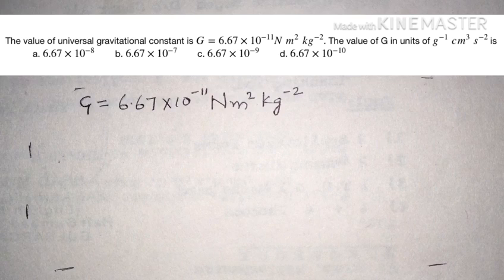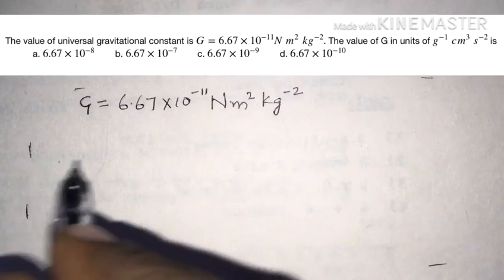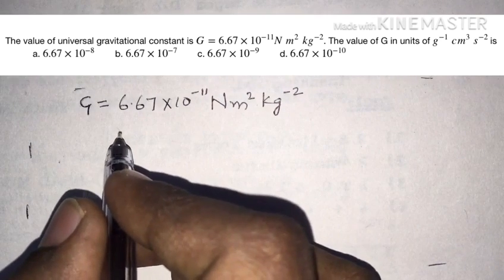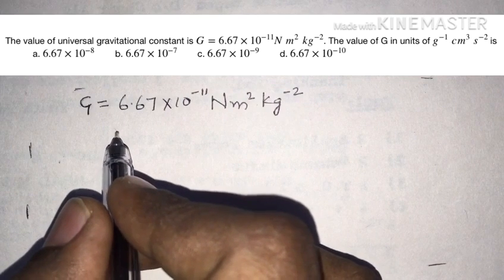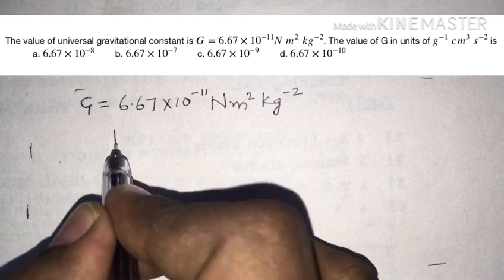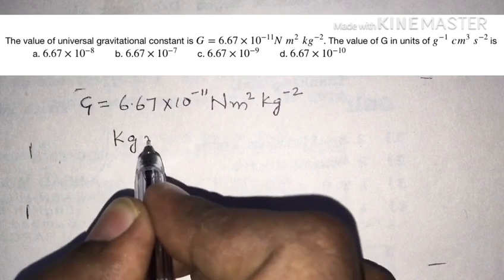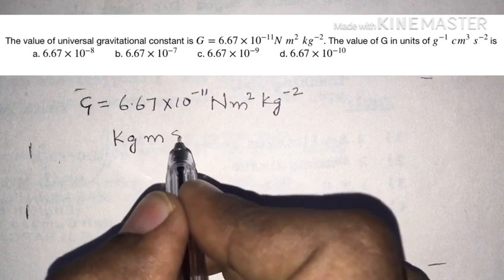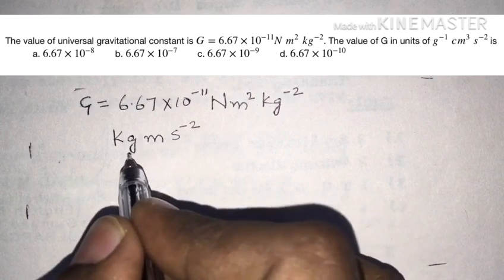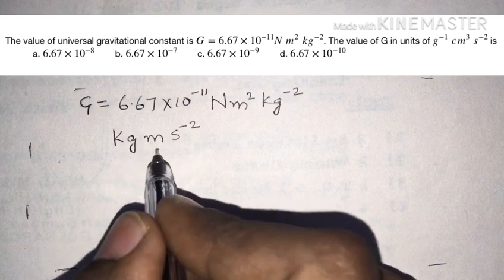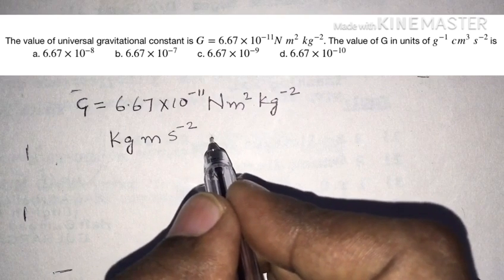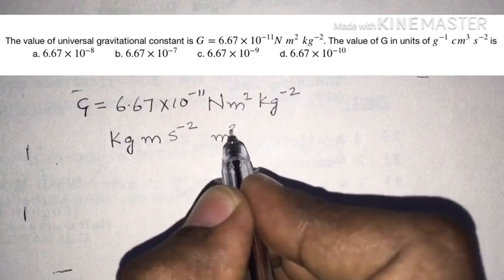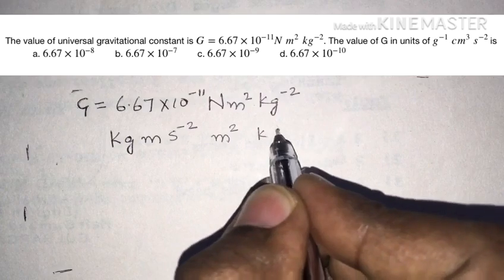We have to convert the units from the SI system to the CGS system. For that, Newton can be written as kilogram meter per second square, since force equals mass into acceleration. The next terms are meter square and kilogram squared.